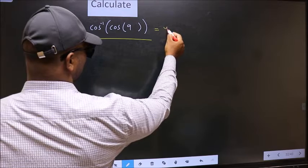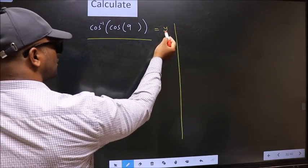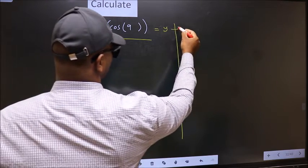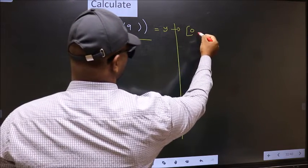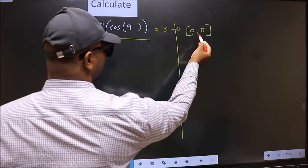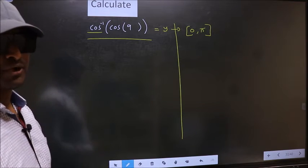So let us take the answer to be y. And the condition is y should lie in the range of cos inverse which is 0 to pi. Our answer should lie in this interval. Clear with this point?